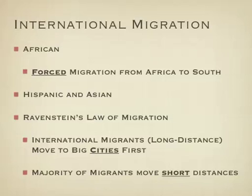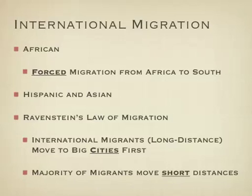For Hispanic and Asian influence, you have to look at Ravenstein's laws of migration. One of his laws states that international migrants like to go to cities first, which helps explain why cities have large ethnic clusterings. He also asserts that the majority of migrants travel short distances. Hispanics coming from Latin America will naturally hit states like Texas, New Mexico, Arizona, or California. Similarly, migrants from Japan and China find it easier to reach the west coast than the east coast.